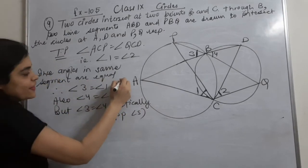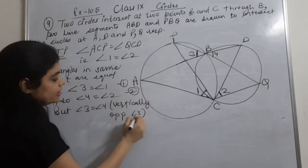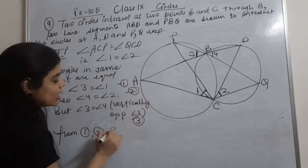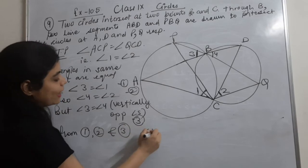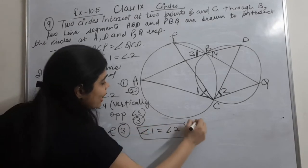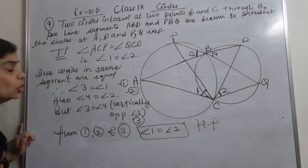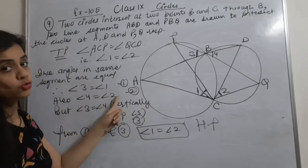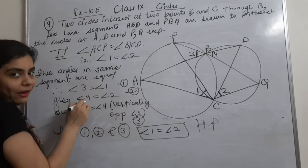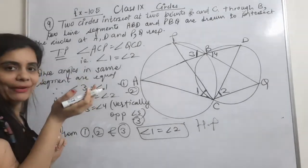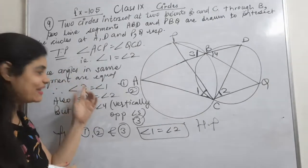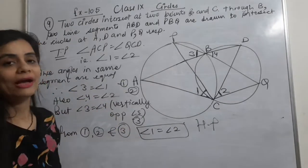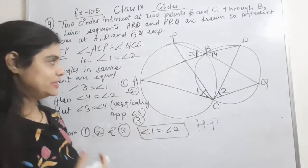From equations one, two, and three: angle 1 = angle 3, angle 4 = angle 2, and angle 3 = angle 4. Since the LHS of these equations are equal, the RHS will also be equal. Therefore angle 1 is equal to angle 2. Hence proved.